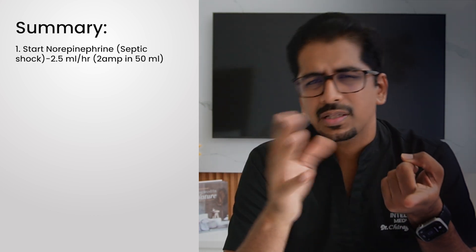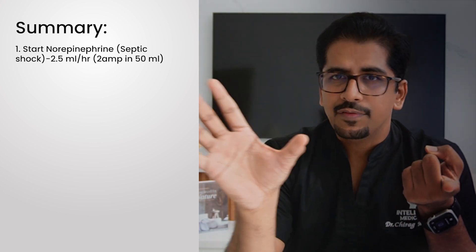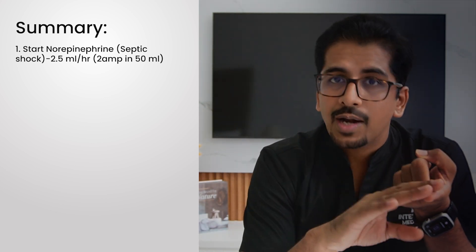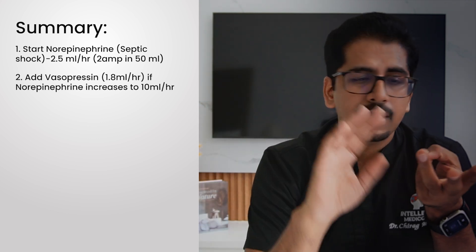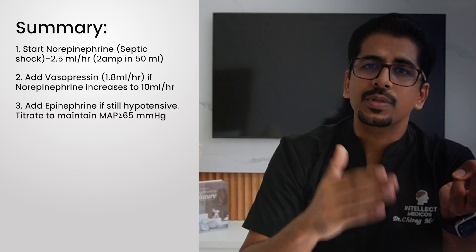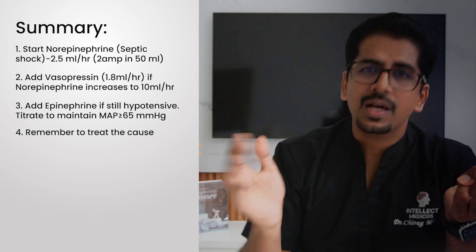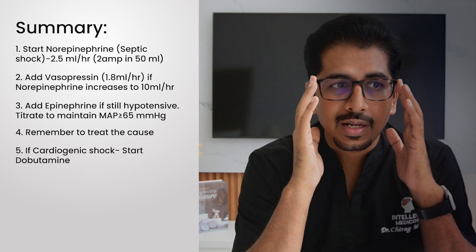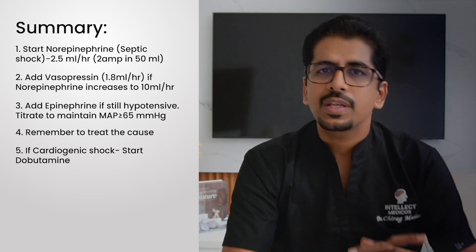To summarize: start with norepinephrine in septic shock and most other shock states (except cardiogenic) — begin at 2.5 ml/hr, increase to 5 then 10 ml/hr. Once it reaches 10 ml/hr, add vasopressin at a fixed dose of 1.8 ml/hr (maximum 2.4). Then add epinephrine as needed. Always maintain the target MAP >65 mmHg and treat the underlying cause — vasopressors and inotropes are only supportive. For cardiogenic shock with low ejection fraction and a cold patient, add dobutamine.